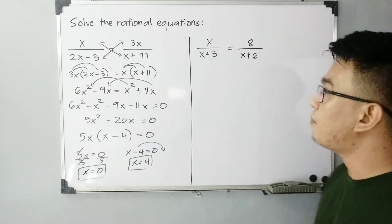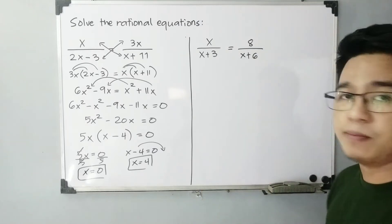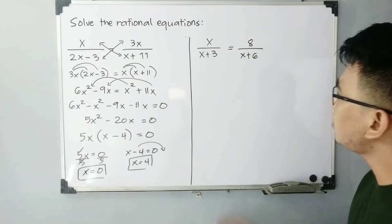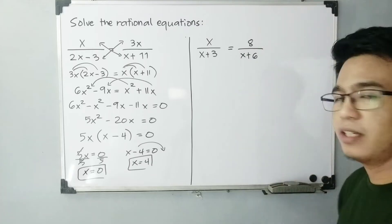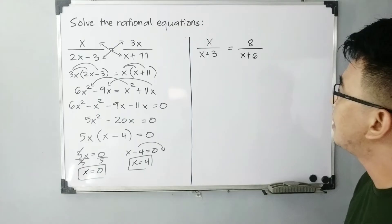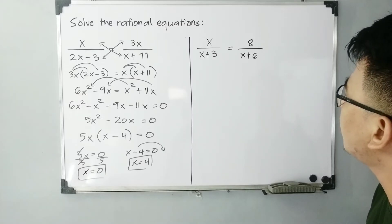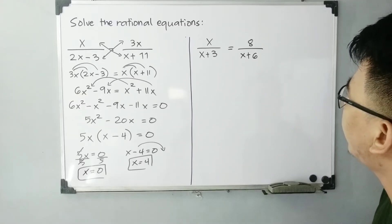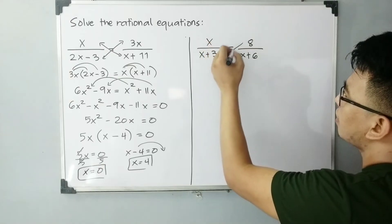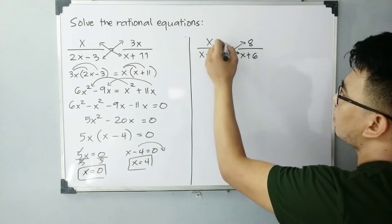Now let's move on with the second example. We have x over x plus 3 is equal to 8 over x plus 6. So what do we need to do here? We will try to use cross multiplication again.